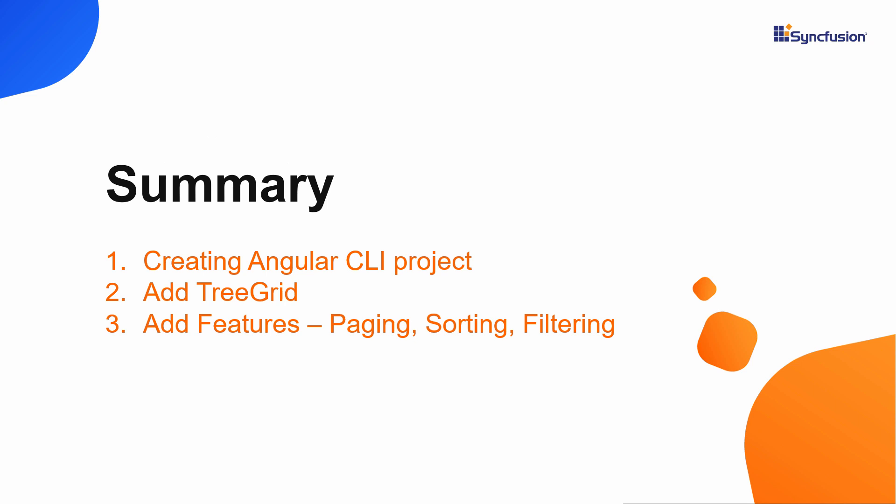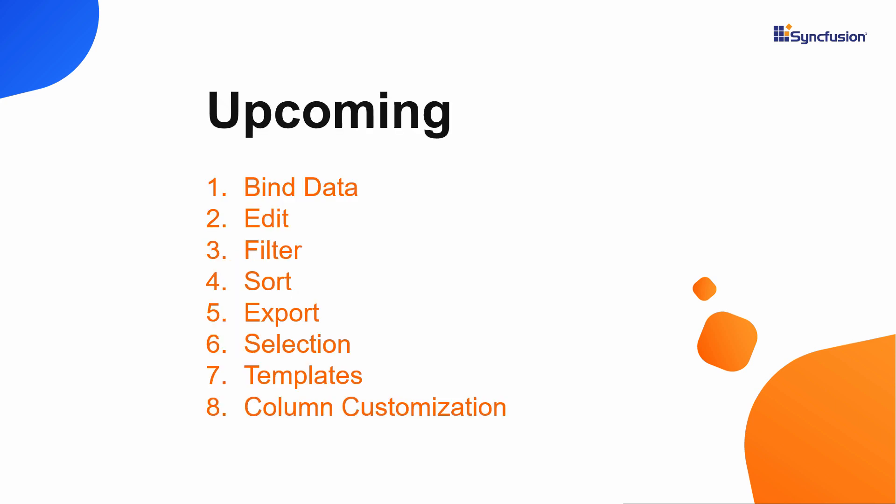Finally, let me summarize some of the main points. I have explained the steps to create an Angular CLI project and add an Angular Tree Grid component to it, along with the important features paging, sorting, and filtering. In upcoming videos, you will learn how to bind data, edit, filter, sort, export, and select Tree Grid data, and use templates to customize columns with various options. If you find this video useful, click the like button and subscribe to our channel. Thanks for watching.